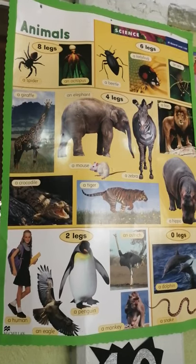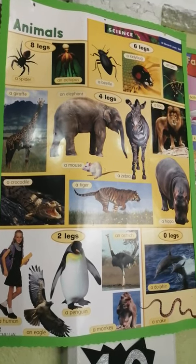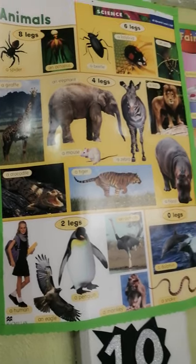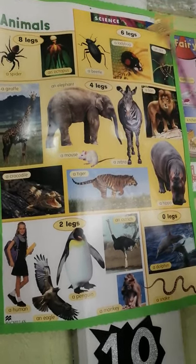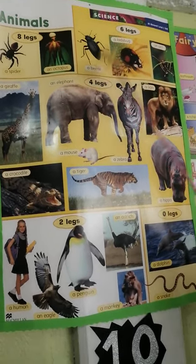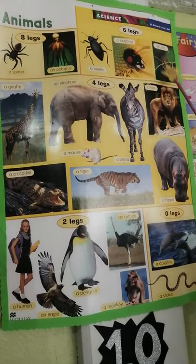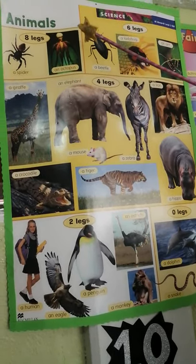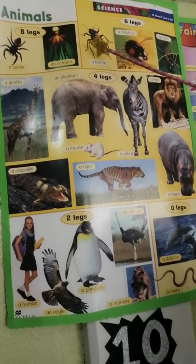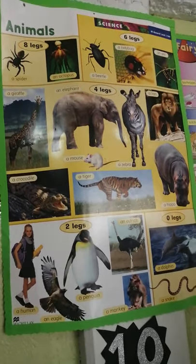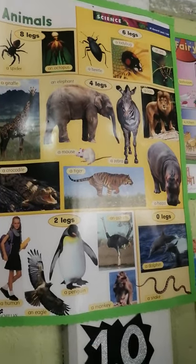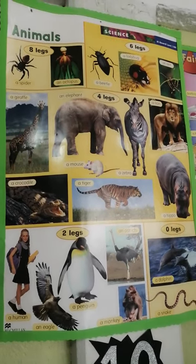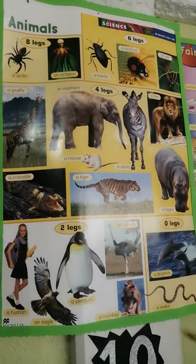What animal has six legs? Very good! You can choose a beetle, a ladybug, or a gnat. Look — one, two, three, four, five, six legs. And now you are going to tell me animals with two legs.